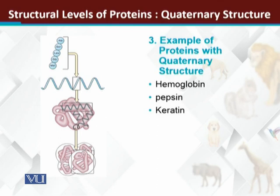Examples of proteins with quaternary structures: any protein that has two or more polypeptide chains will form a quaternary structure. Here we have hemoglobin, which has four polypeptide chains. There is also pepsin, which has more than one polypeptide chain. And keratin, which is the nail and hair protein, also has a quaternary structure.